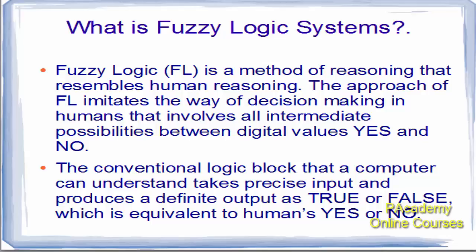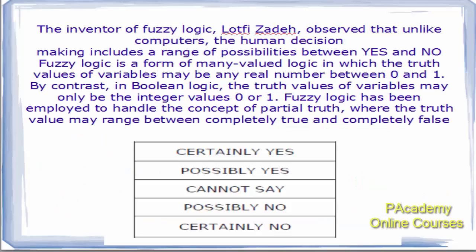The inventor of fuzzy logic, Lotfi Zadeh, observed that unlike computers, human decision-making includes a range of possibilities between yes and no. Fuzzy logic is a form of many-valued logic in which the truth value of a variable may be any real number between zero and one. In contrast, in Boolean logic — that is, computer logic — the truth values of a variable may only be the integer value of zero or one.